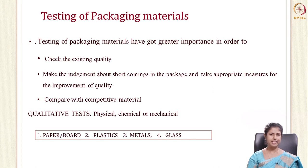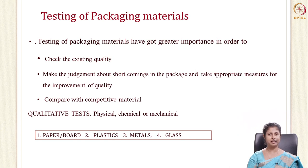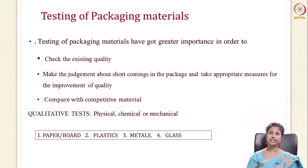These qualitative tests are divided into physical, chemical, or mechanical tests. There are basically four types of packaging materials: paper, paperboard, plastics, metals, and glass. In these sections we will not be dealing with glass and metal testing — only with paper and plastic testing.